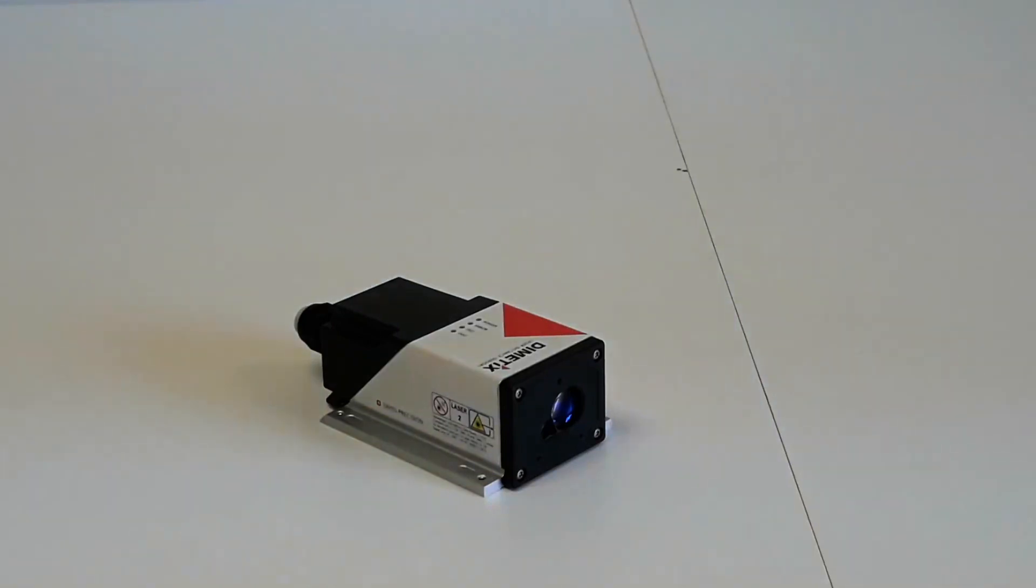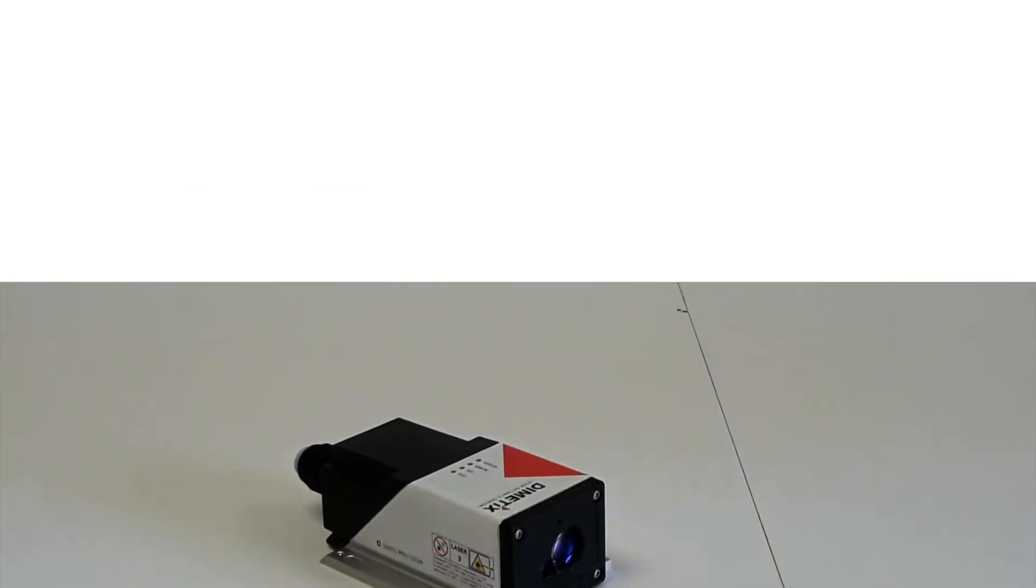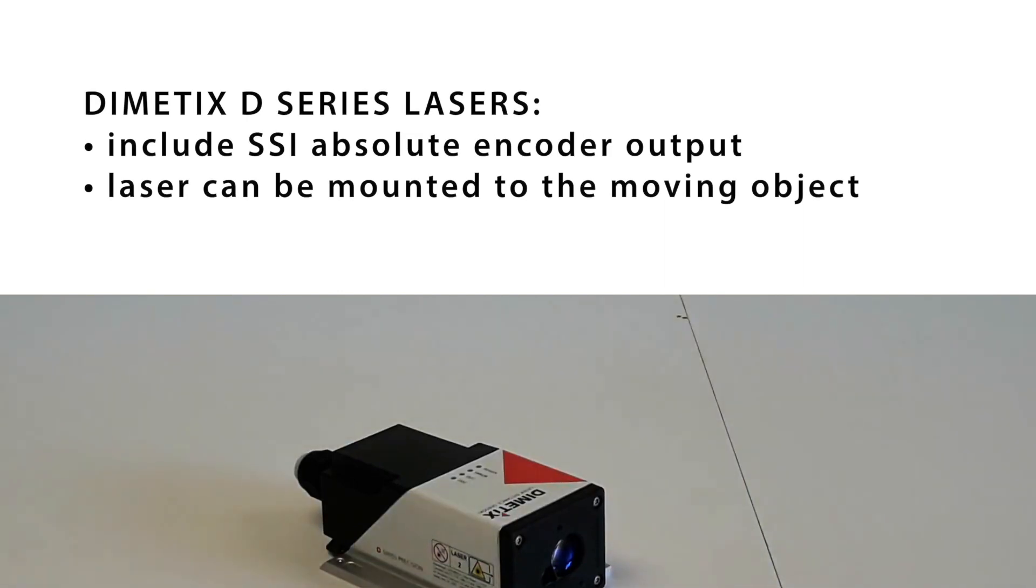Dymedix laser distance sensors are a more reliable alternative to traditional wheel encoders. Dymedix D-Series lasers include SSI absolute encoder output. The laser can be mounted to the moving object, or better yet, to a fixed reference and aimed at the moving object. This way the electronics are kept off of the moving cart.